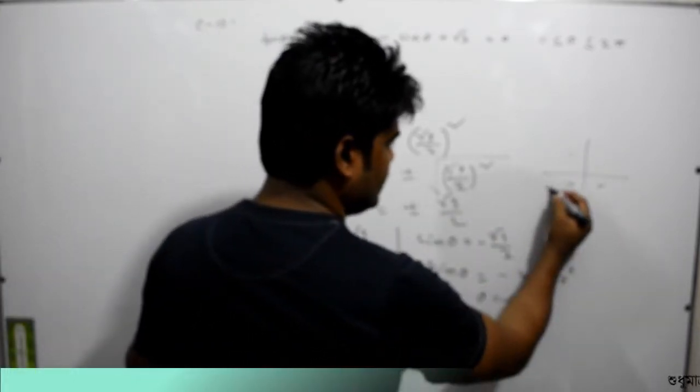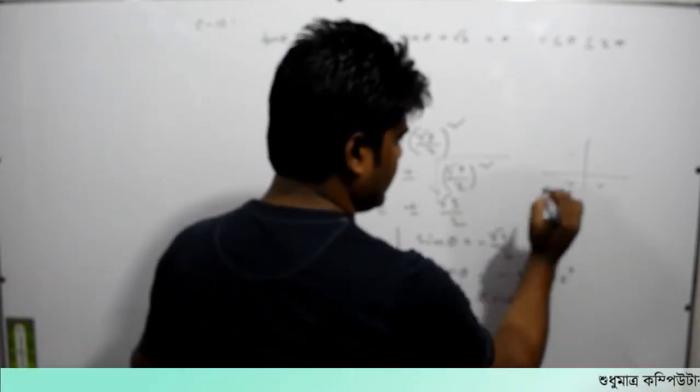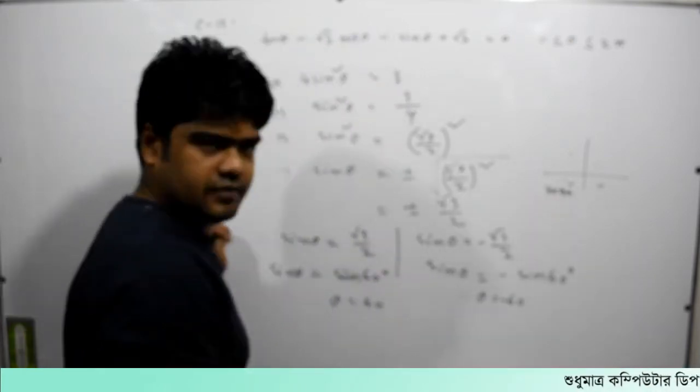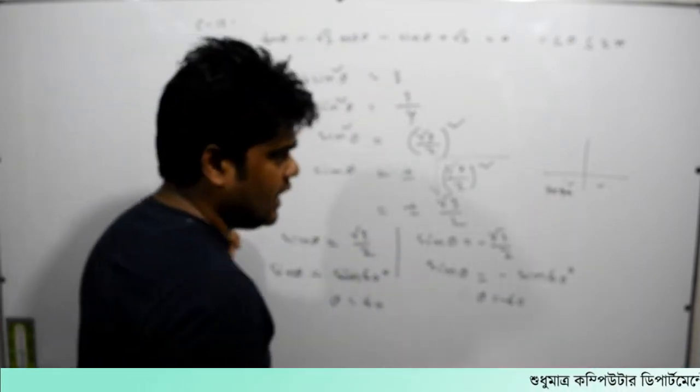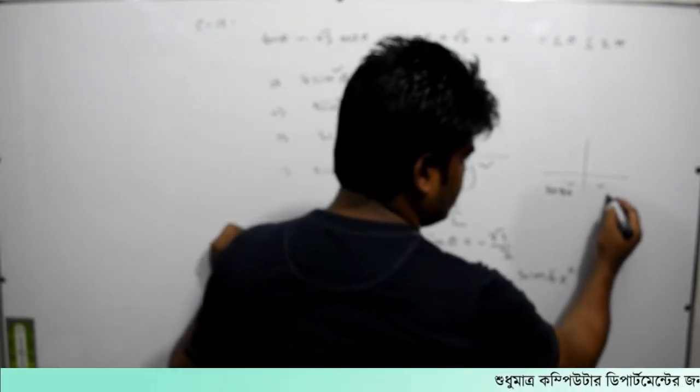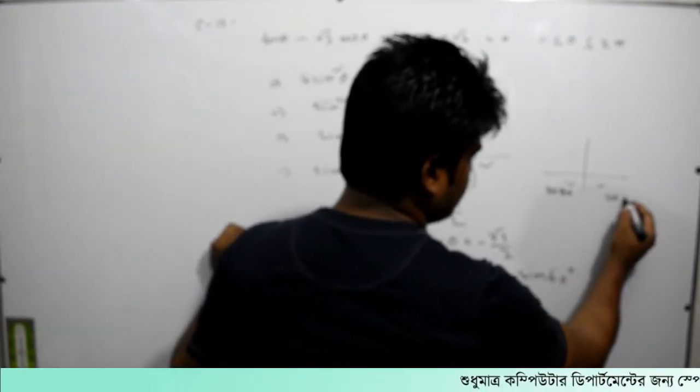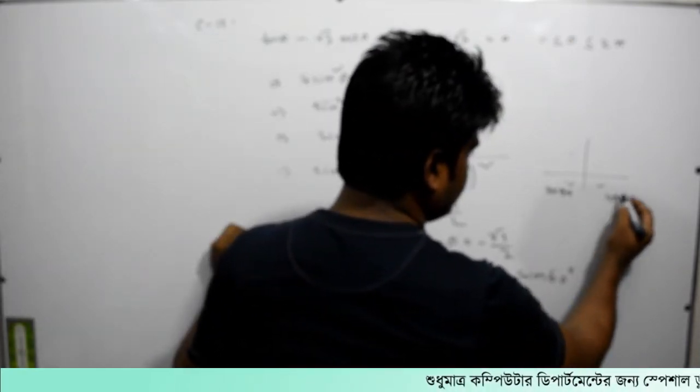We have 3 minus 90 degrees, and 1 minus 90 is 4 minus 90.